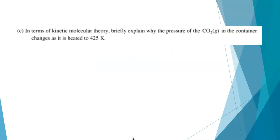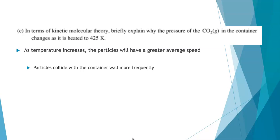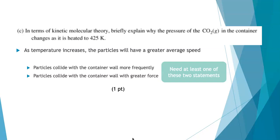In terms of kinetic molecular theory, explain why the pressure of the carbon dioxide gas changes as it's heated to 425 Kelvin. Well, we know already from part A that as temperature increases, the particles will have a greater average speed. And we have been talking about in our calculation for part B that as the temperature increases, the pressure increases. Why is that? Well, there's two reasons. One is that the particles are going to collide with the container wall more frequently. We're going to have more collisions with the container, and that will increase the pressure. The particles will also hit the container wall with more force. So it's really both of these two factors that explain why the pressure increases. You needed one of these two statements. You could, of course, have both, but you needed one of these two statements to get the one point for this question.